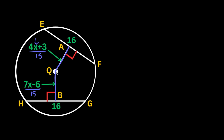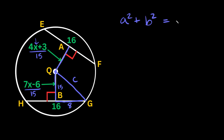Now that we know the distances from the chords to the center, we can find the radius. Draw a straight line from the center to one of the endpoints of a chord. This gives us a right triangle. The height of the triangle is 15. The full chord length is 16, so half of that is 8, which is the base. The hypotenuse — which is the radius — is what we're looking for, so we'll label it C.